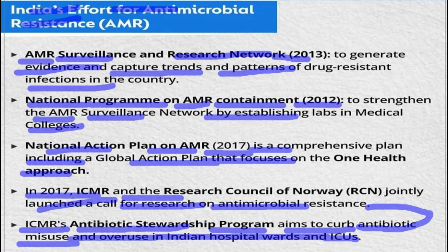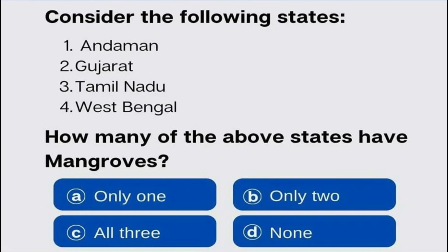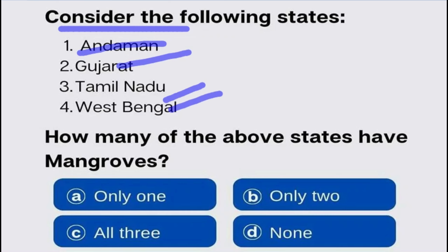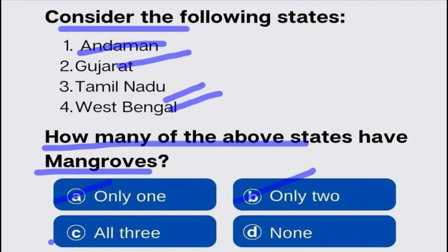Now let's look at a practice question. Consider the following states: Andaman, Gujarat, Tamil Nadu, and West Bengal. How many of these states have mangroves? Is it only one, only two, all three, or none of the above?